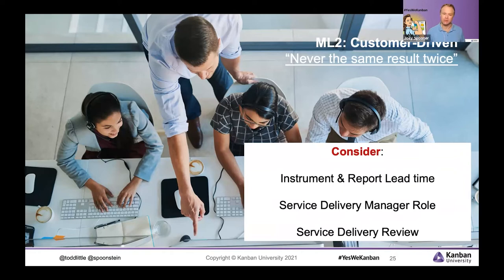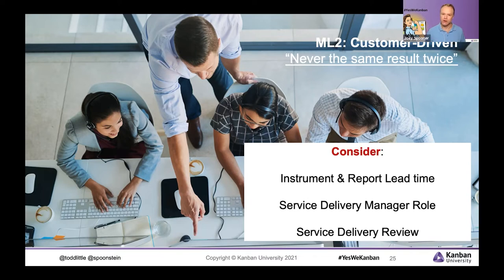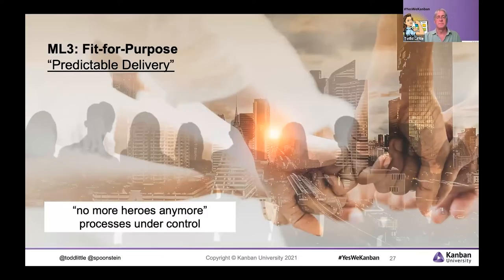To improve from maturity level two, set up lead time tracking — how long it took to start the work, finish it, and get it back into the customer's hands. You might also have someone take on a service delivery manager role, focusing on making sure work moves through the system without hanging around too long. We also grow our feedback meetings into what's called a service delivery review, asking: how's it working for our teams, how's it working for our customers, and are we really hitting the mark for what they want? If we are, we're moving toward being fit for purpose.